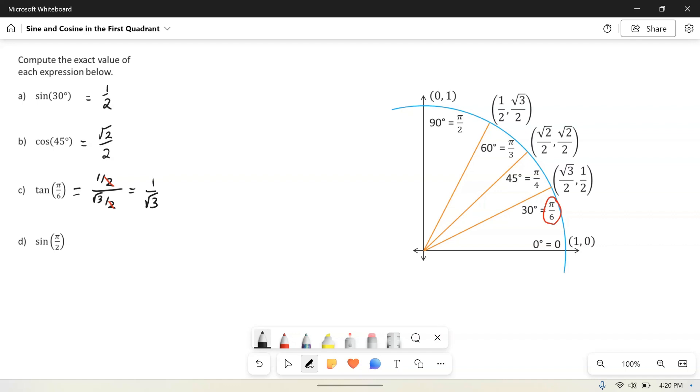The last one we want to look at is sine of pi over 2. Sine of pi over 2, it's not one of the special angles that we have, but it is a nice angle. So let's find where pi over 2 is located.